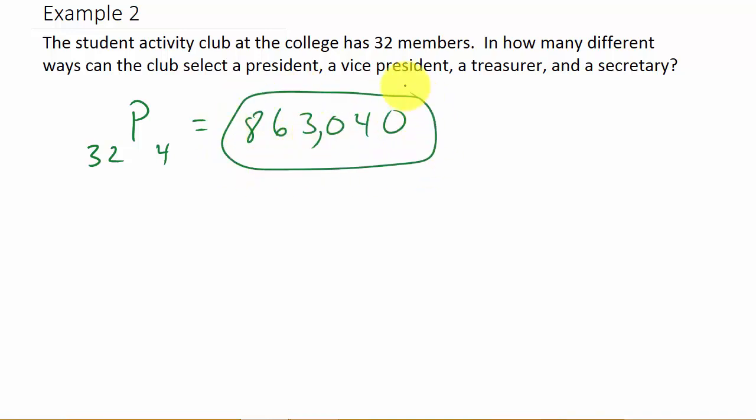You can see there's 863,040 ways. I hope the video helped. I'm going to have combinations, another video explaining the difference between combinations and permutations, and a video on calculating all this stuff out using the formula by hand. Check those out. Hope it helped. Give me a like, share and subscribe, check out my other videos.